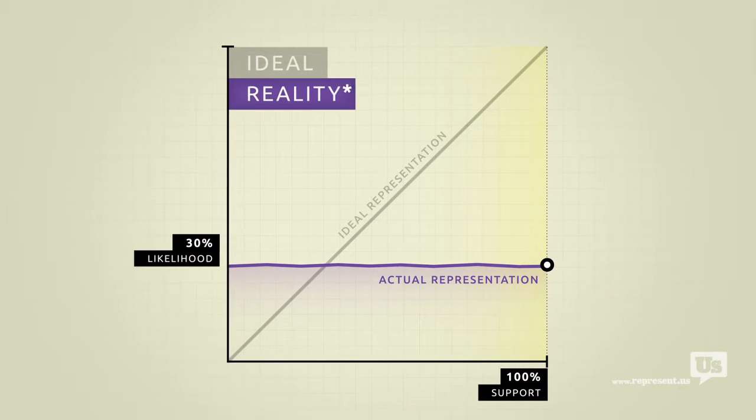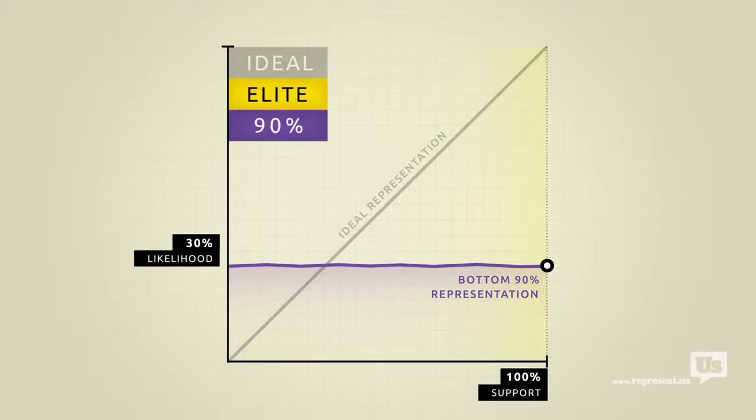But there's a catch. This flat line only accounts for the bottom 90% of income earners in America. Economic elites, business interests, people who can afford lobbyists, they get their own line.